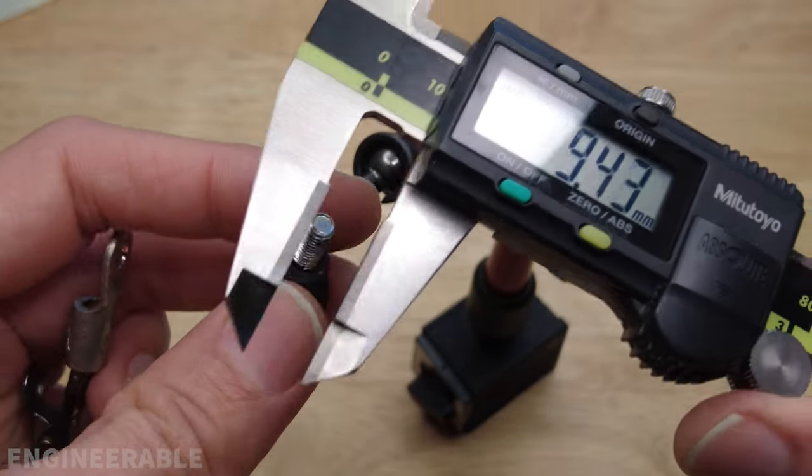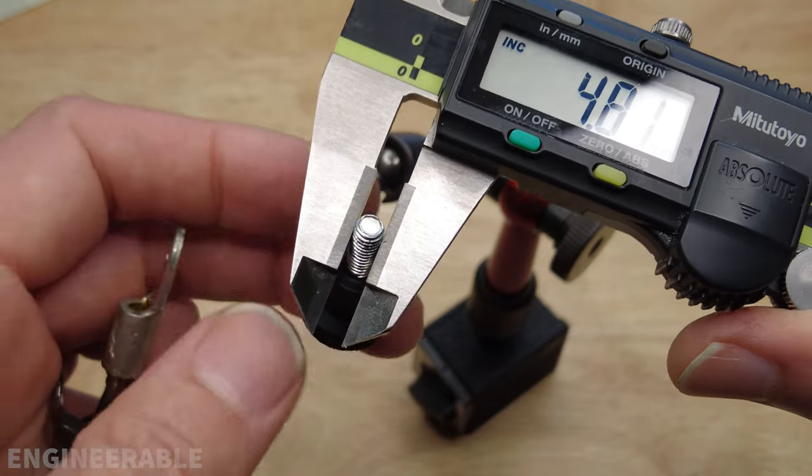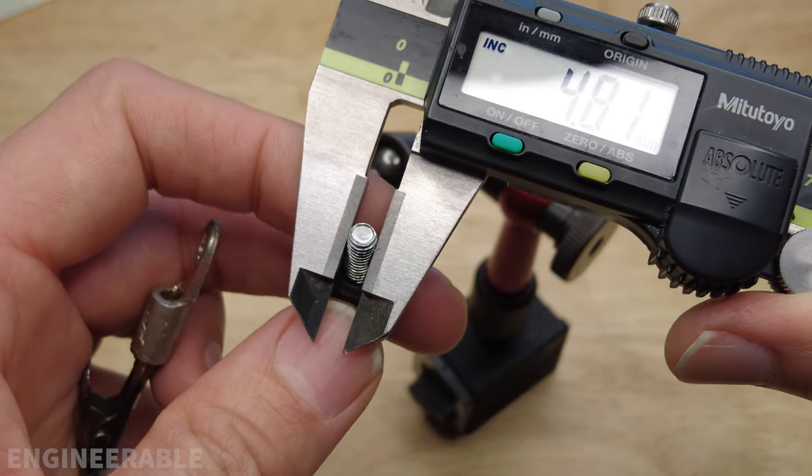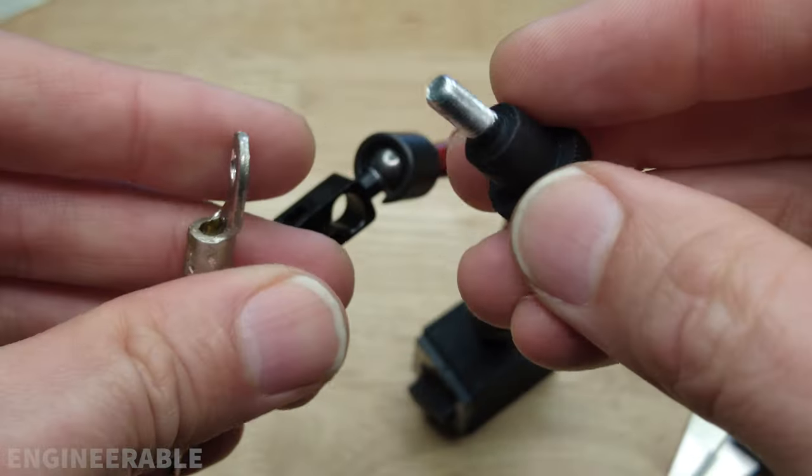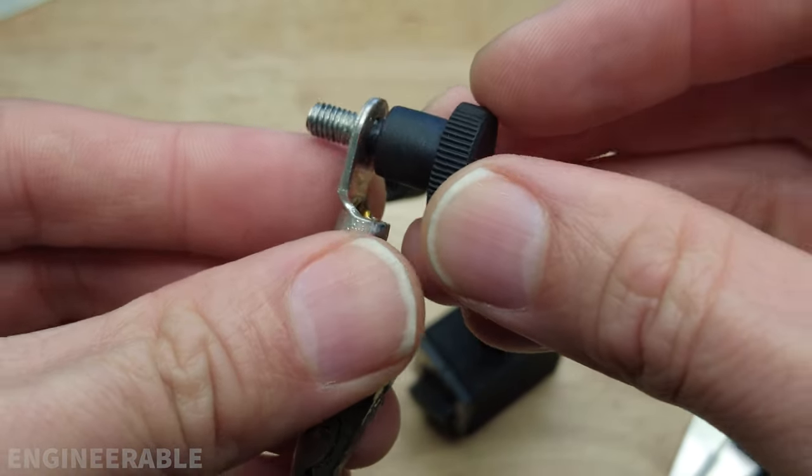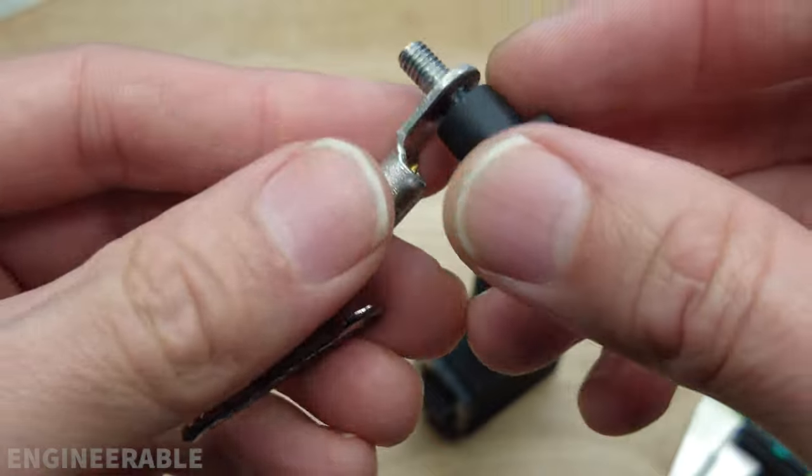The screw that the dial indicator arm uses is an M5 screw, so it measures about 4.81 on the outsides of the threads, which means it fits perfectly through this 5 millimeter hole or number 10 hole.